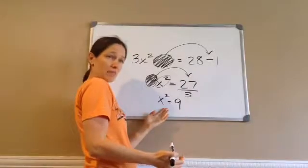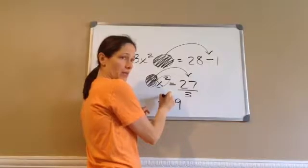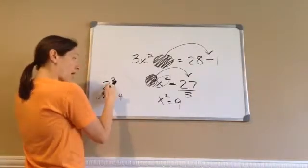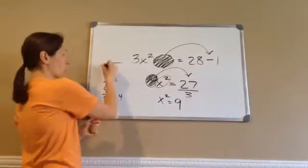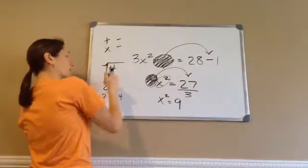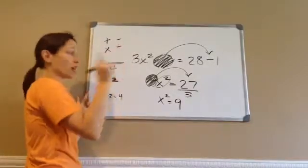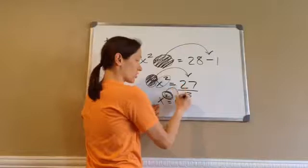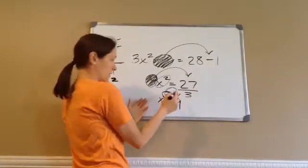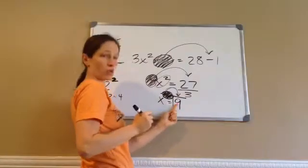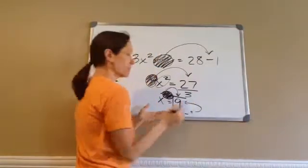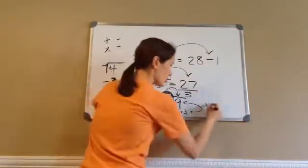Now, is that a little bit easier to see? What is the opposite of squaring something? For example, 2 squared is 2 times 2, which is 4. The opposite of 2 squared is square root of. The opposite of plus is minus, the opposite of multiplying is dividing. The opposite of squaring is square root of. So, how do I get rid of this? I'm going to move it across the equal sign. And because I move this square across the equal sign, it becomes the square root of. So, x equals the square root of 9. And what is the square root of 9? We know that 3 times 3 equals 9. So, x is 3.